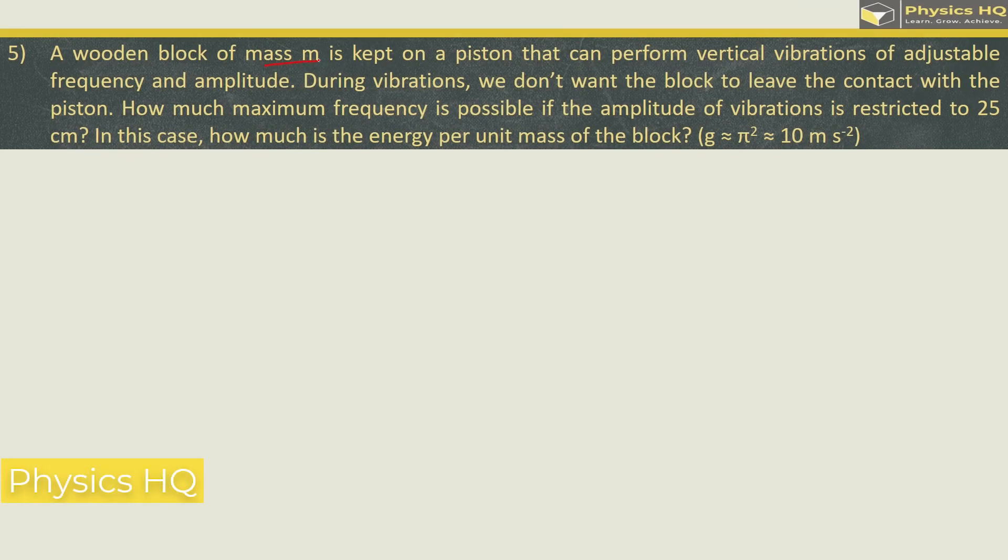A wooden block of mass m is kept on a piston that can perform vertical vibration of adjustable frequency and amplitude. During vibrations we don't want the block to leave the contact with the piston. How much maximum frequency is possible if the amplitude of vibration is restricted to 25 centimeter? In this case how much is the energy per unit mass of the block? We have to take g equal to pi squared equal to 10 meter per second squared.